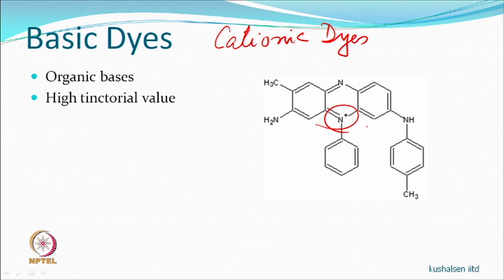Triphenylmethane-based cationic dyes have high tinctorial value — they absorb radiation from the ultraviolet region and also radiate out in the visible region, so they appear more brilliant than other dyes. A similar structure that is an acid dye can be modified to become a basic dye. The basic dye structure gives a much brighter, more brilliant color than its acid dye counterpart.